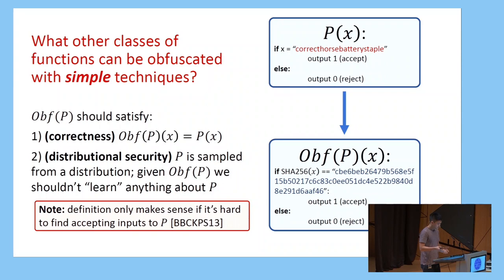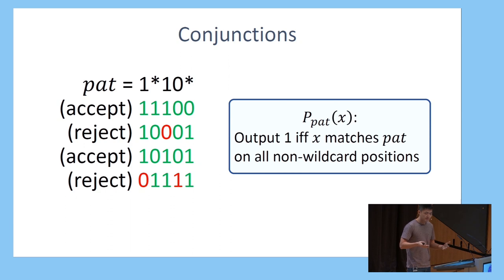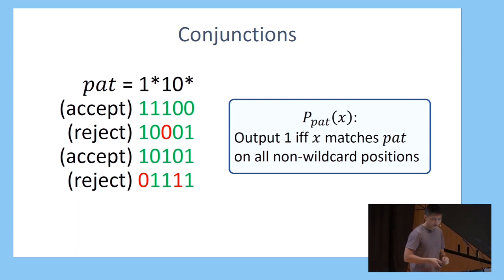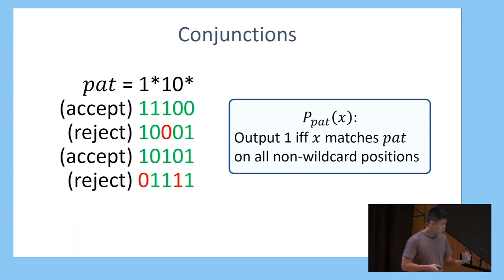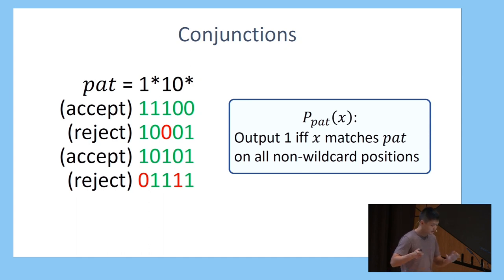We have this simple heuristic obfuscation for point functions, and you can ask what other classes of functions can be obfuscated with simple techniques — hopefully something more expressive than just functions that accept on a single input. What I'll be talking about today are these programs that compute a conjunction over their input bits. A point function accepts if and only if the input matches a string on every single position. Conjunctions are parameterized by a pattern — a string of ones, zeros, and wildcards — where the wildcard character denotes a position where we don't care what the input bit is. These programs accept if and only if the input bit string matches the pattern at all the non-wildcard positions.